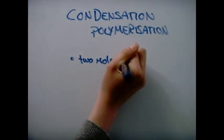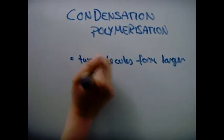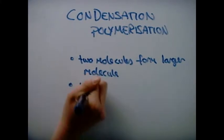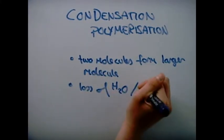Condensation polymerization. When two molecules form a larger molecule with the loss of a smaller molecule such as water or hydrogen chloride.